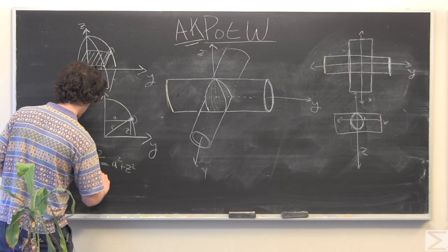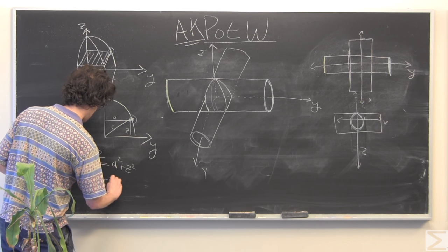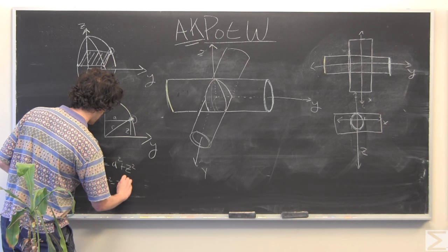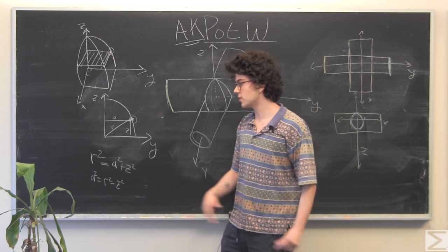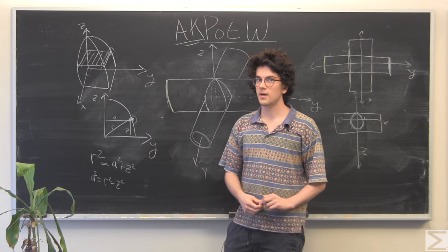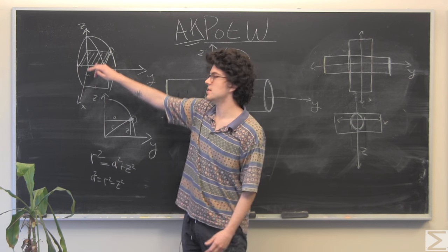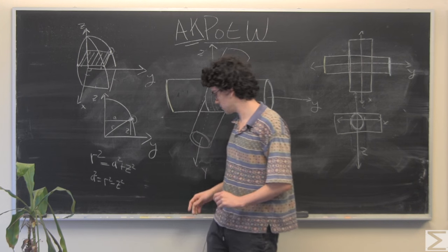Therefore, a squared equals r squared minus z squared. And that's very convenient because a squared is the area of that little square.